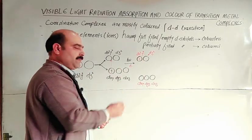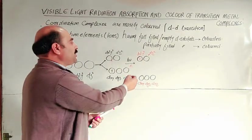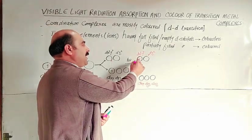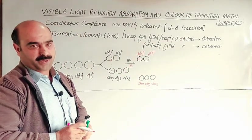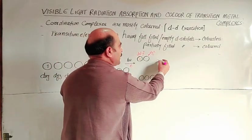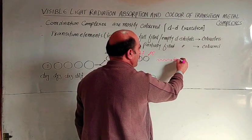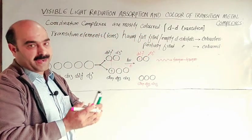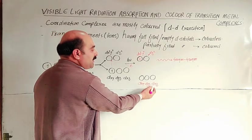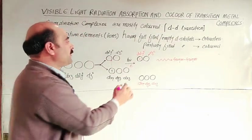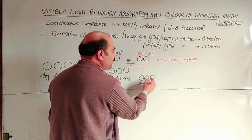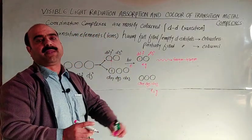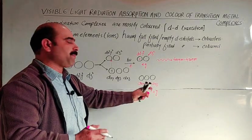When the electron promotes from one d-orbital to another d-orbital, this is d-d transition. When it returns, there is emission of radiation. The two groups have the same energy within each group. This group is called eg and this is called t2g - doubly degenerate and triply degenerate orbitals. Orbitals having the same energy are called degenerate orbitals.